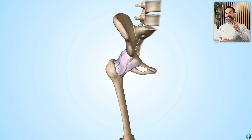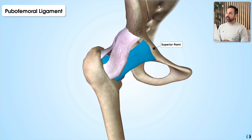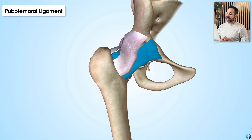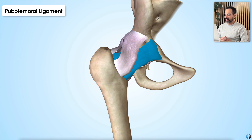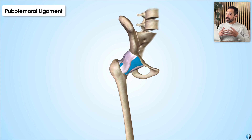The third ligament is the pubofemoral ligament, which connects from the pubis to the femur. It originates from the superior ramus of the pubis and the obturator crest of the pubis. It runs distally, almost underneath the iliofemoral ligament, where it blends into the medial iliofemoral ligament as well as the joint capsule of the hip. Its role is to prevent excessive extension, like the others, as well as excessive abduction of the hip joint.